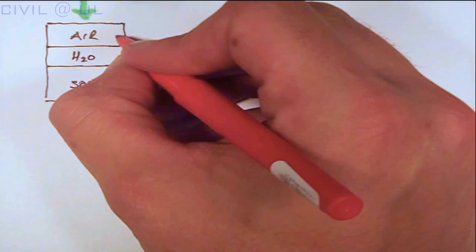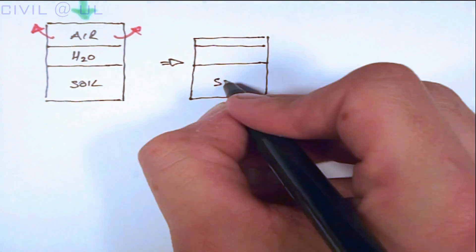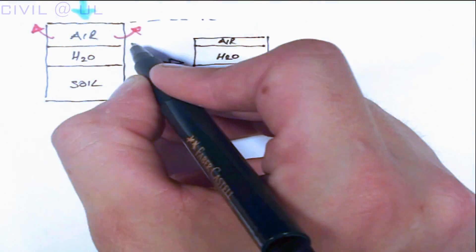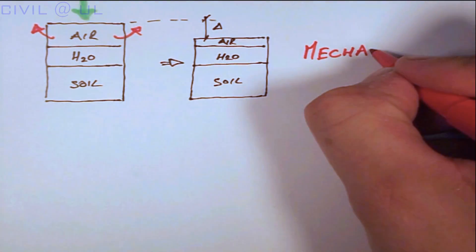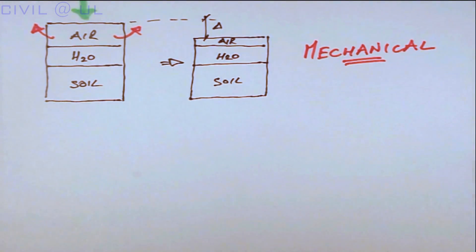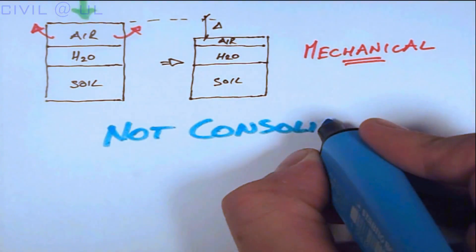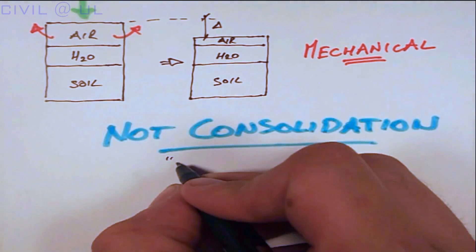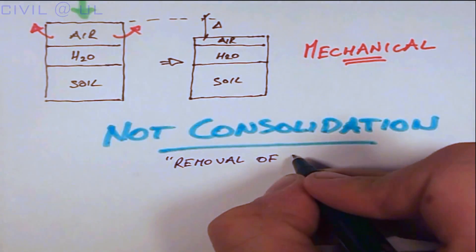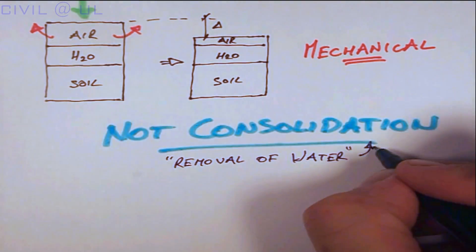To begin, compaction is defined as the increase in soil density due to the expulsion of air, and this is done by mechanical means. Compaction is not to be confused with consolidation, which is the increase in soil density as a result of expulsion of moisture.